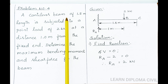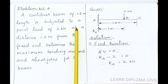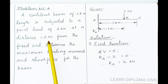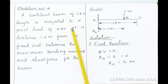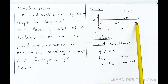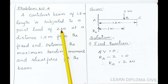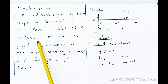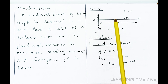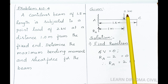Problem number 4. A cantilever beam of 1.5 meter length is subjected to a point load of 2 kN at a distance of 1 meter from the fixed end. The given data: cantilever beam of 1.5 meter length, point load of 2 kN applied at 1.0 meter from the fixed end.